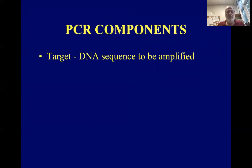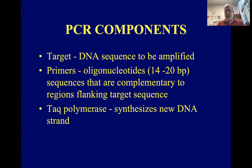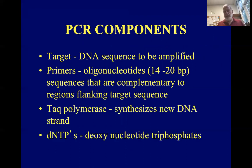The components of a PCR reaction include the sequence to be amplified, called the target sequence; the primers — short sequences that flank the region to be copied; the DNA; and the nucleotides, which exist as triphosphates when not incorporated into the DNA molecule.